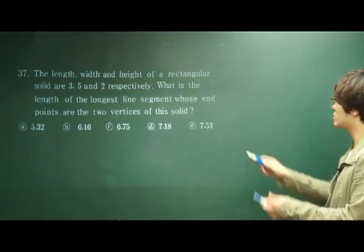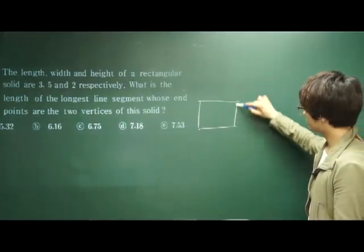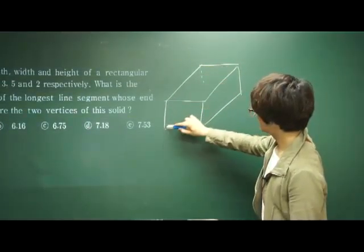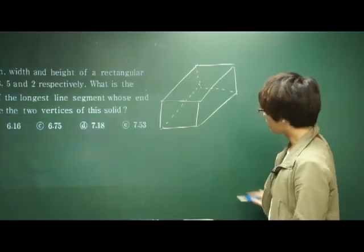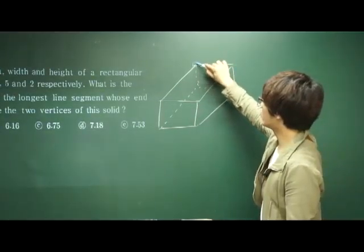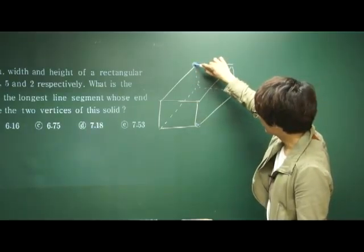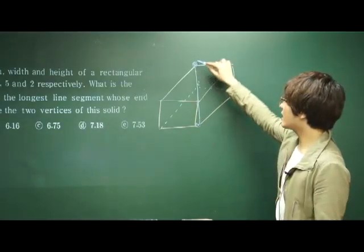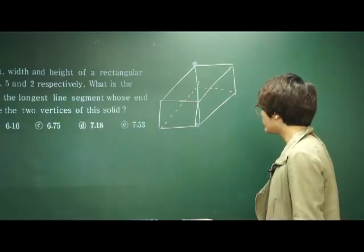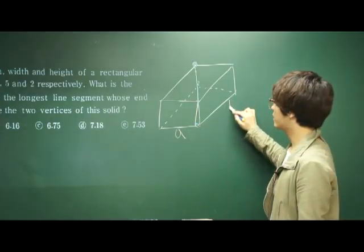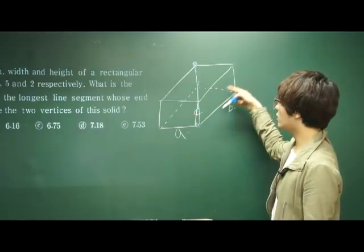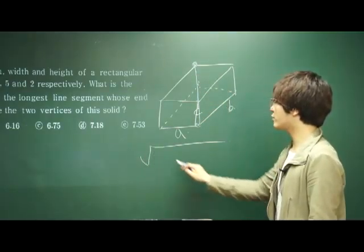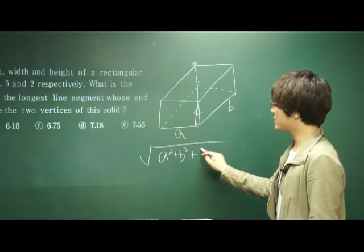We've covered this question before. In a rectangular solid, the longest line segment we can draw goes from one vertex to the opposite vertex. When given the length, width, and height, the length of the longest line segment is the square root of A squared plus B squared plus C squared.